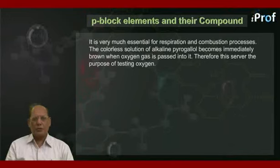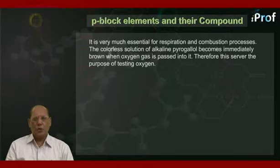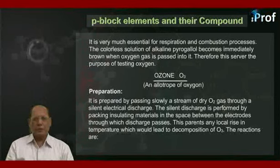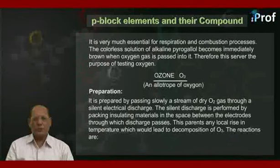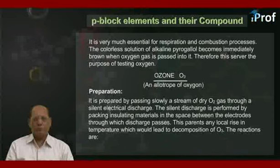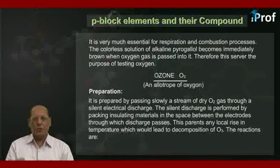The next allotrope of oxygen is ozone, O3. It is prepared by passing a slow stream of dry oxygen gas through a silent electrical discharge. The silent discharge is performed by packing insulating materials in the space between the electrodes through which the discharge passes.